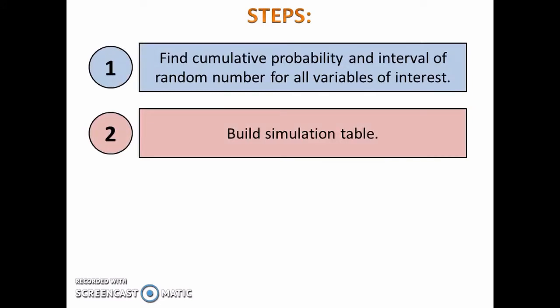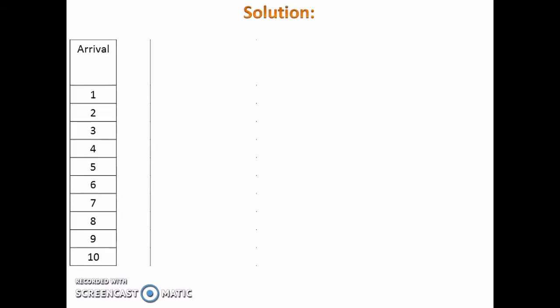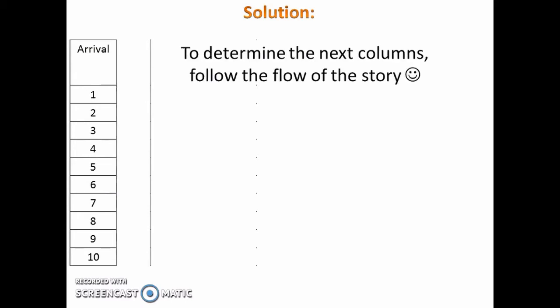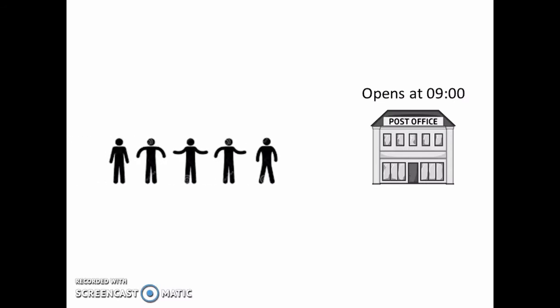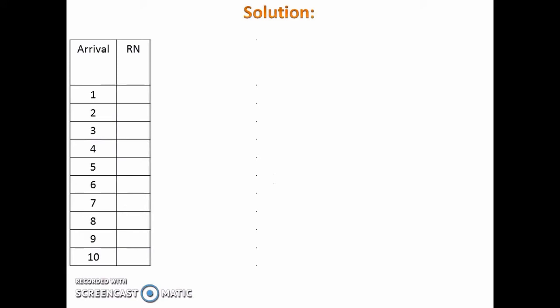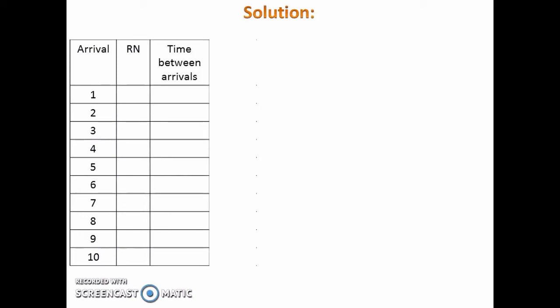Because we are asked to do simulation for 10 arrivals, begin the table with a column for arrival and write number 1 until 10 in the column. To determine the next columns, follow the flow of the story. The post office opens at 9 in the morning and people will come. When a person arrives, we need to know the time of arrival. In order to determine the time of arrival, we must first know time between arrivals, so we need a column for time between arrivals. But since time between arrivals is a variable, we must first put a column for random number before a column for time between arrivals. After we have a column for time between arrivals, we can have a column for arrival time.